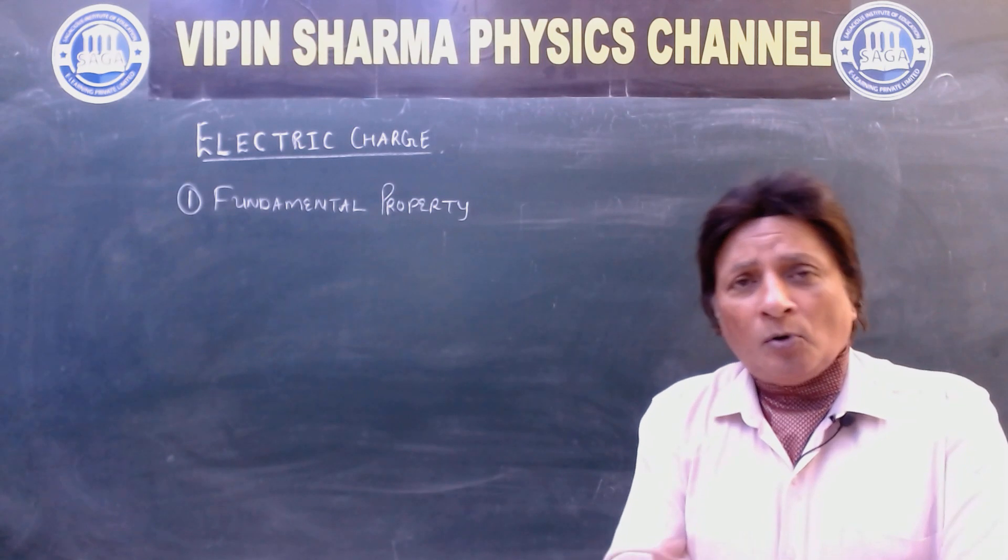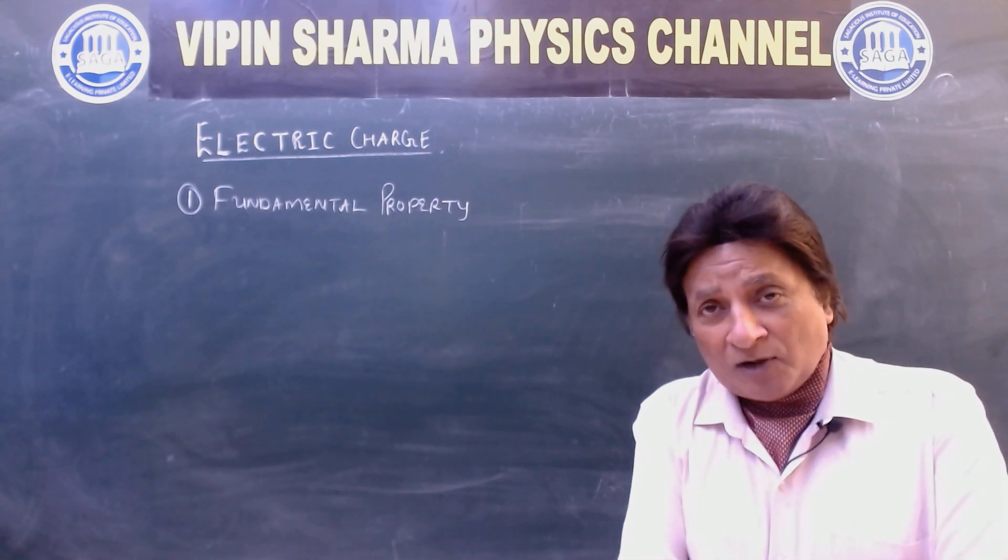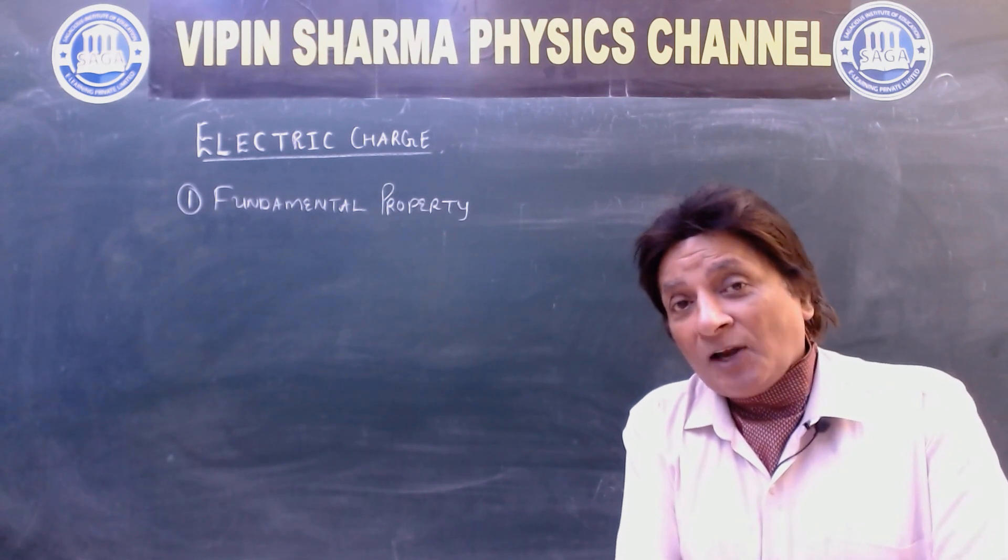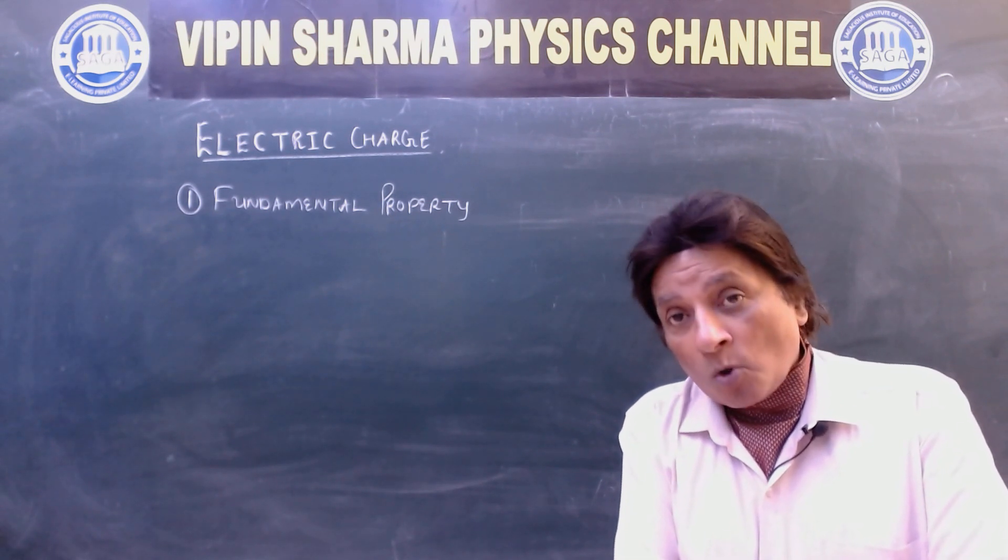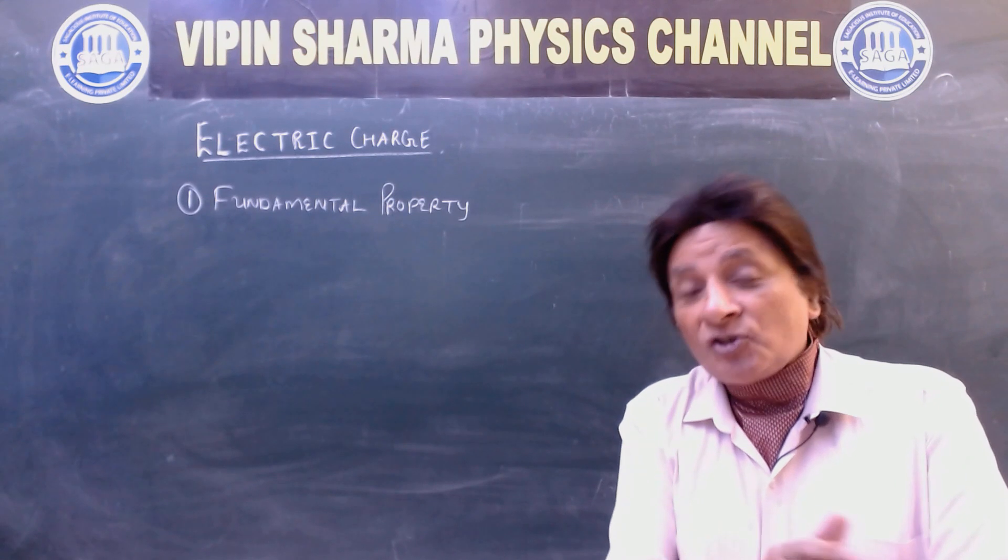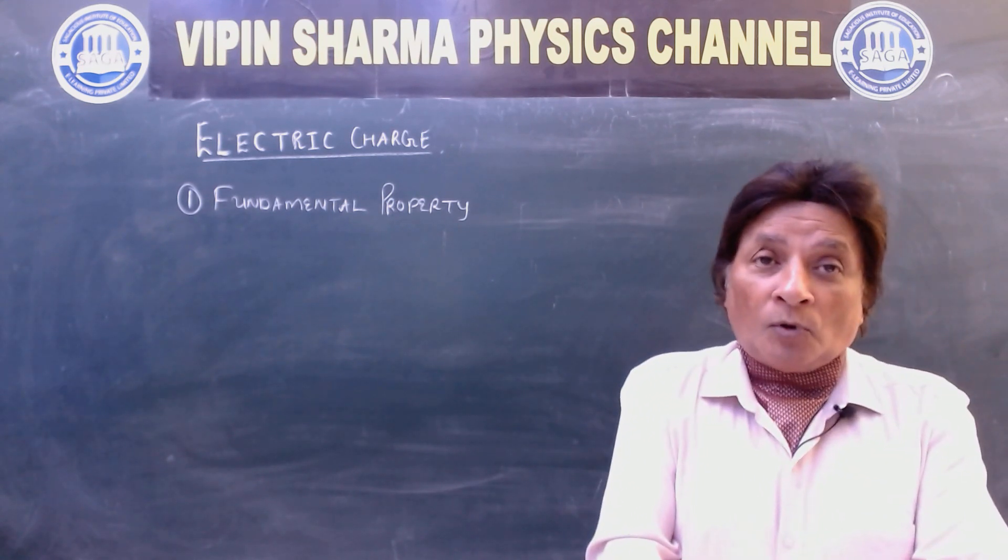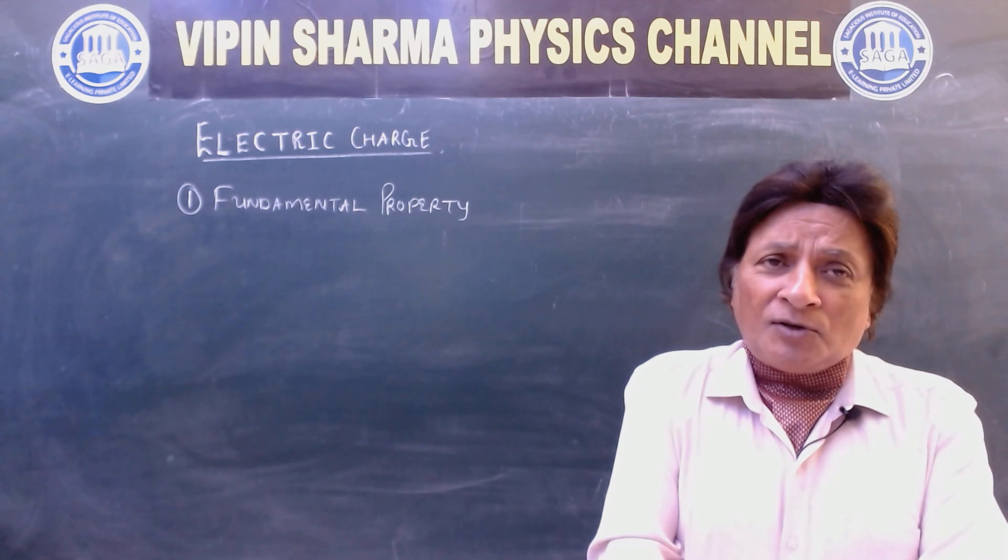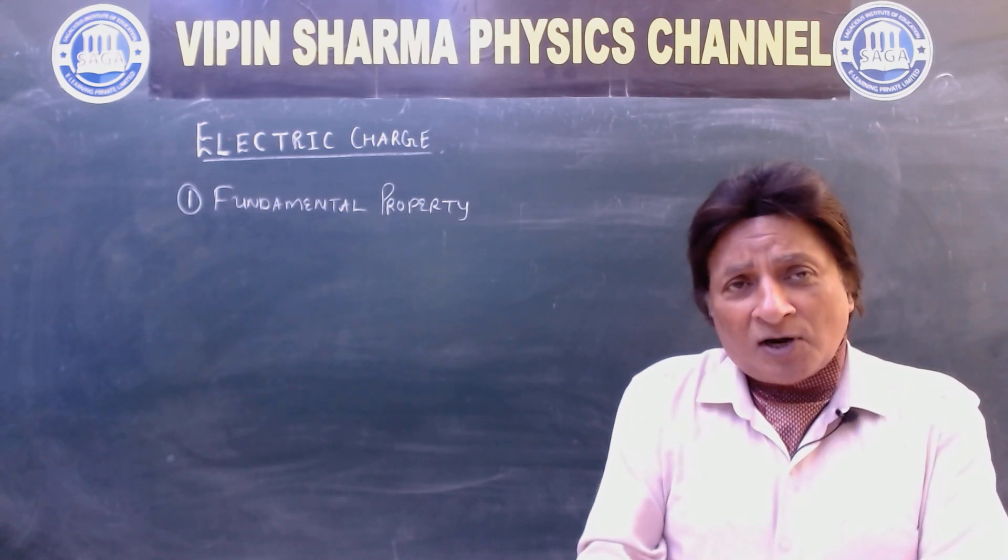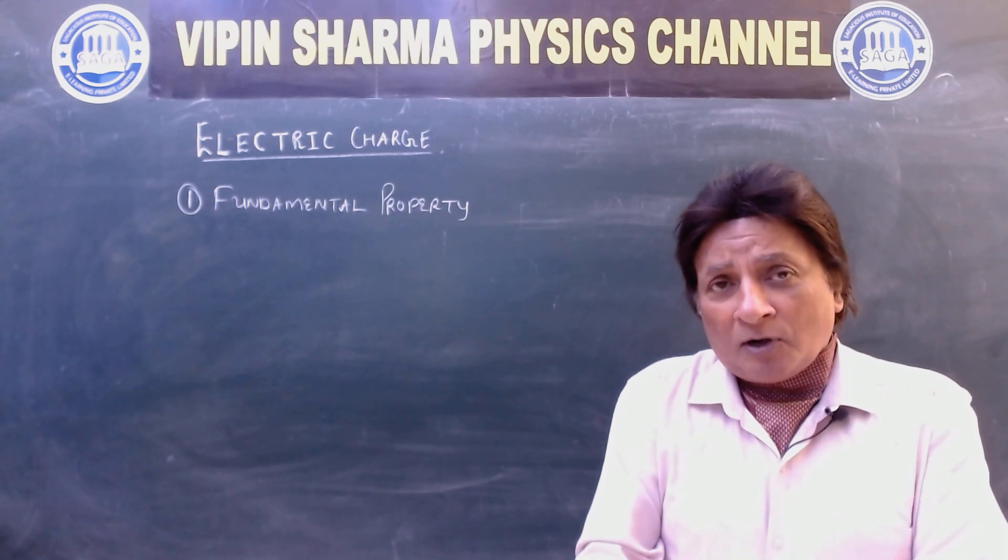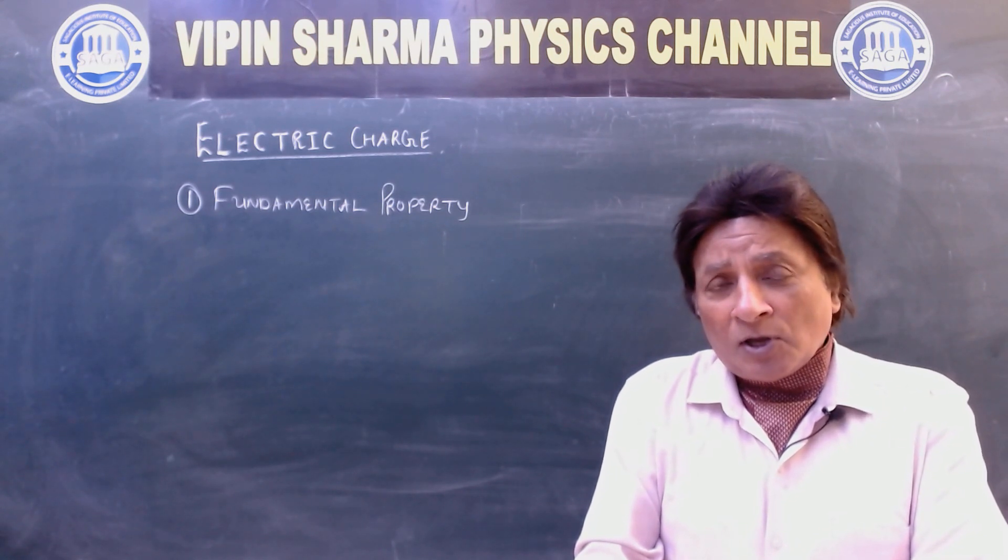You know, when a substance is in excess of electrons or deficient in electrons, then we say that it is a charged body. Excess of electrons means negatively charged body, deficient in electrons means positively charged body.